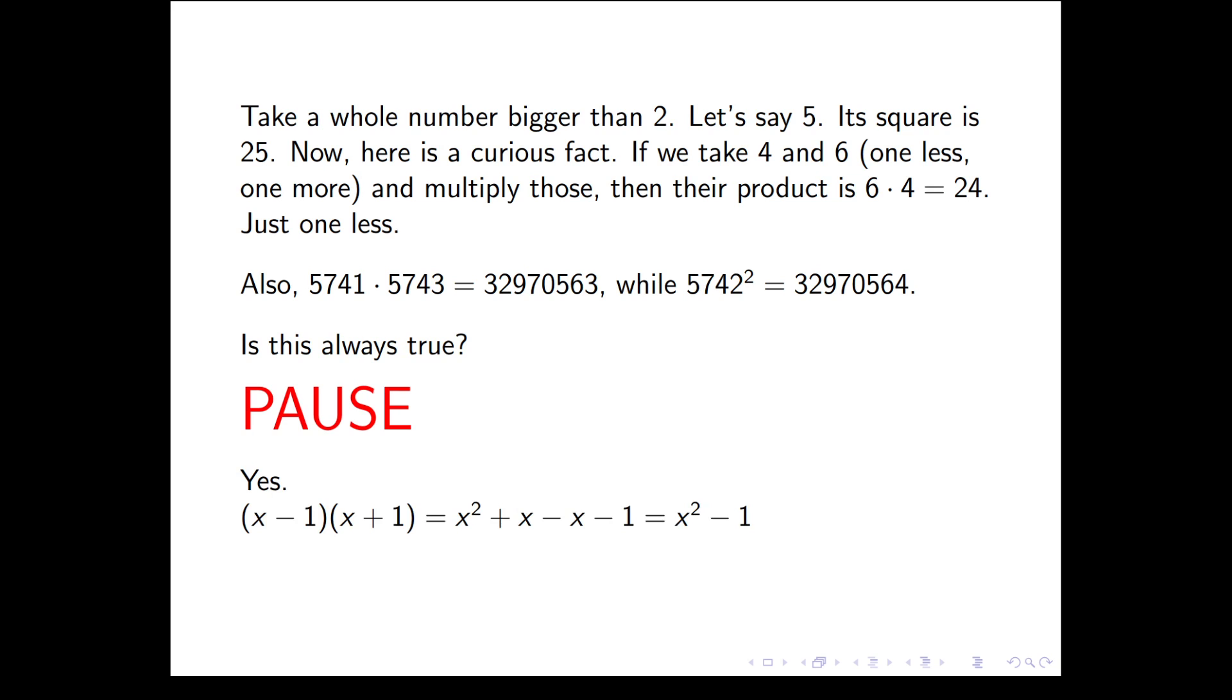Here is a very simple algebraic argument. Instead of using a particular number, we just use x. Therefore we can prove it for all numbers bigger than 2, and simple cross multiplication shows that it's always x squared minus 1.